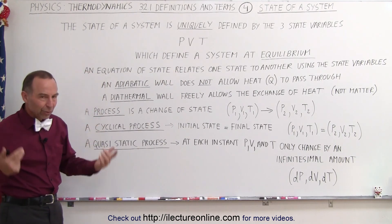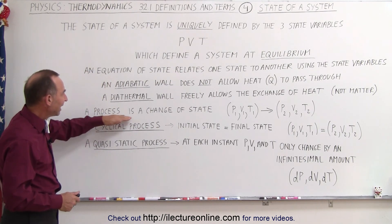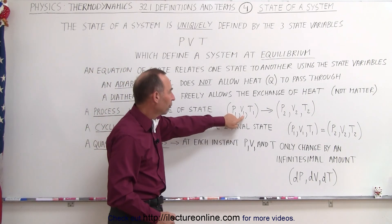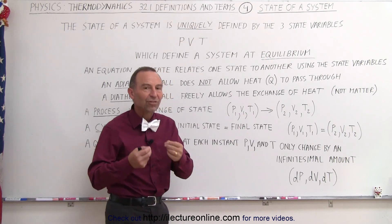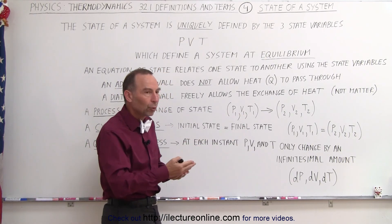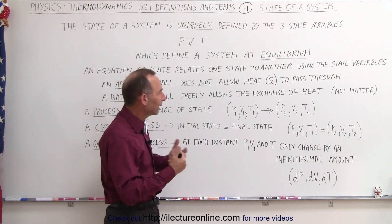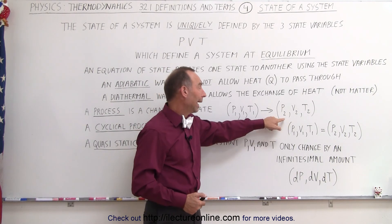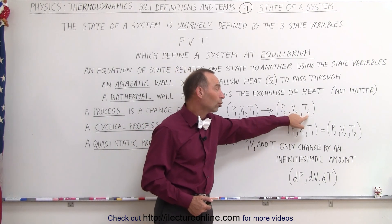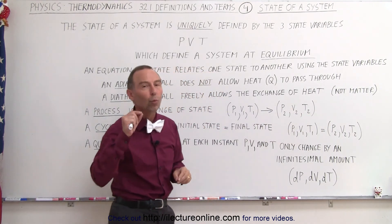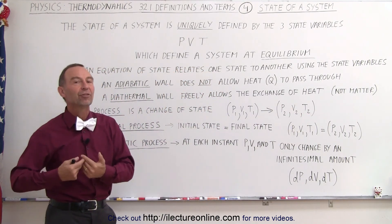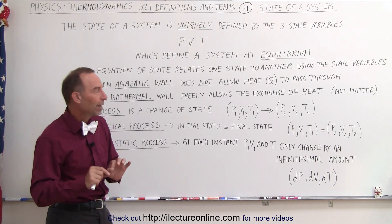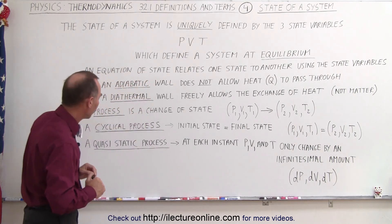A process is a change of state. We had the gas in a particular state with a particular pressure, volume, and temperature, state one. Then we do something to it, or something happens, or it does something, and we go to a different state, state two. The pressure may have changed, the volume may have changed, or the temperature may have changed. As long as one of the three have changed, you're now in a different state. Not all three have to change, although that often happens. It depends upon how it did change.